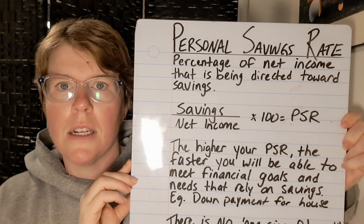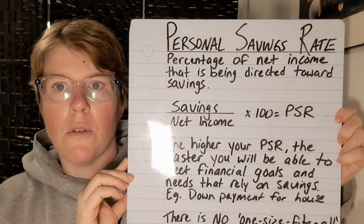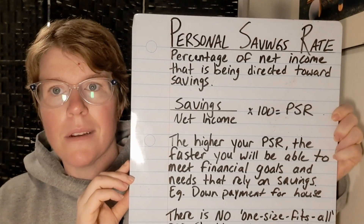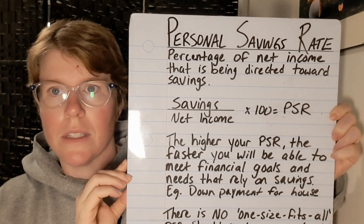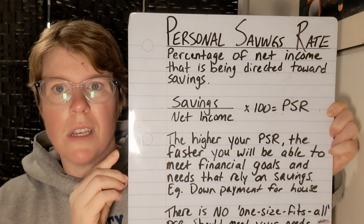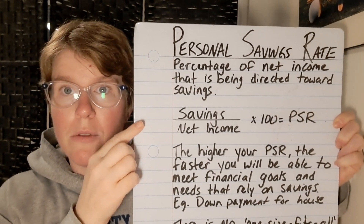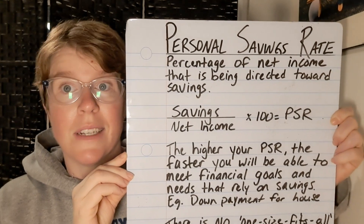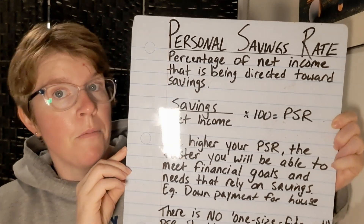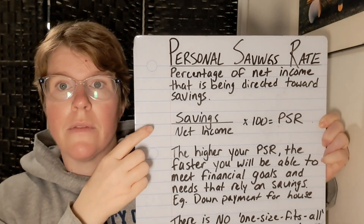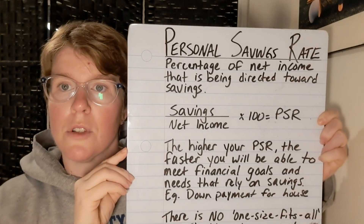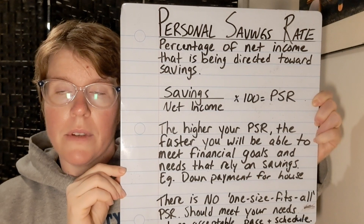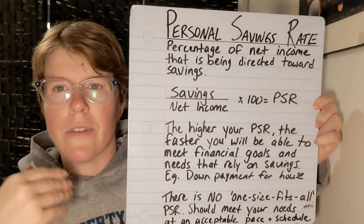Your personal savings rate is the percentage of net income that is going towards savings — how much at the end of the week or end of the month you're putting towards savings. It's a really simple calculation you can get from your budget or from a cash flow statement. It's simply: savings divided by net income, times 100, equals your personal savings rate. The higher your personal savings rate, the faster you'll reach your financial goals.